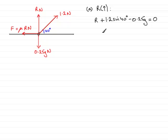So all we need to do is just to rearrange this for r. So if I add 0.25g to both sides, we would have 0.25g. And if I subtract 1.2 sin 40 from both sides, we would end up with this equation. Entering this on a calculator gives you 1.67865 and so on.